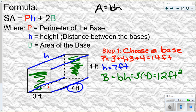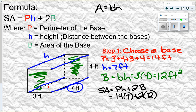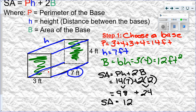So all I did was choose a base, find the perimeter of that base — 3 plus 4 plus 3 plus 4 — find how far apart the bases are from each other, which was 7, and find the area of the base — 3 times 4, which is 12. Now we plug into the formula: SA equals P times H plus 2 times big B. P was 14, H was 7, plus 2 times big B which is 12. Follow order of operations — multiply before adding: 14 times 7 is 98, 2 times 12 is 24. Adding those together gives a surface area of 122 square feet.